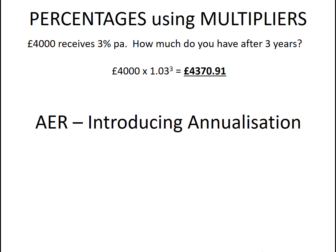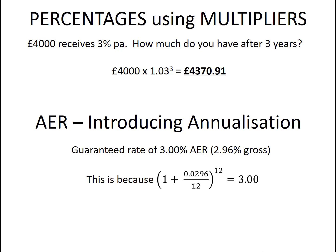It explains how a gross percentage rate of 2.96% can lead to a 3% annual equivalent rate through the process of monthly annualization, which you work out using the AER formula applied to monthly annualization. Assuming you're happy with both those concepts, let's move on.